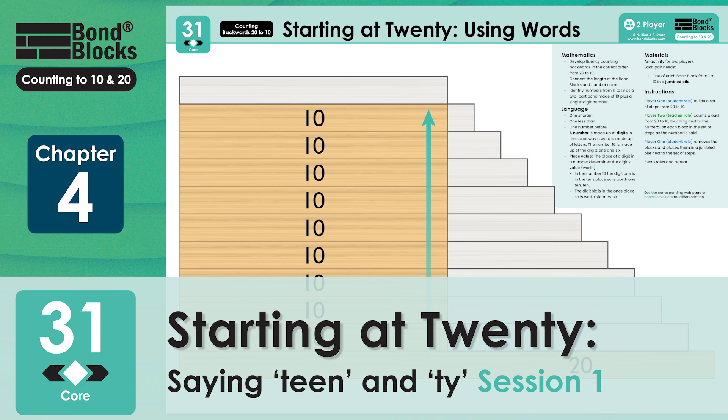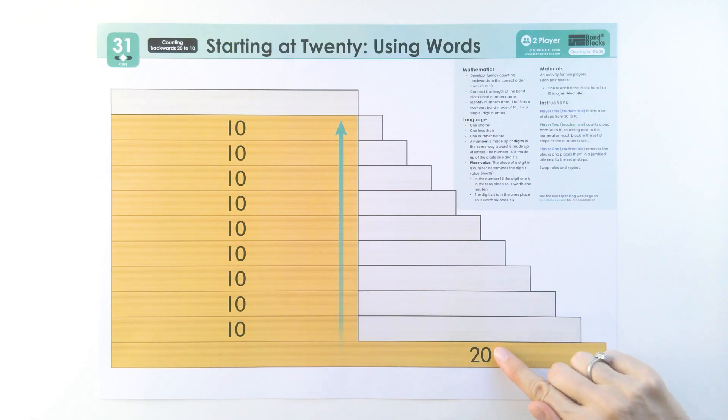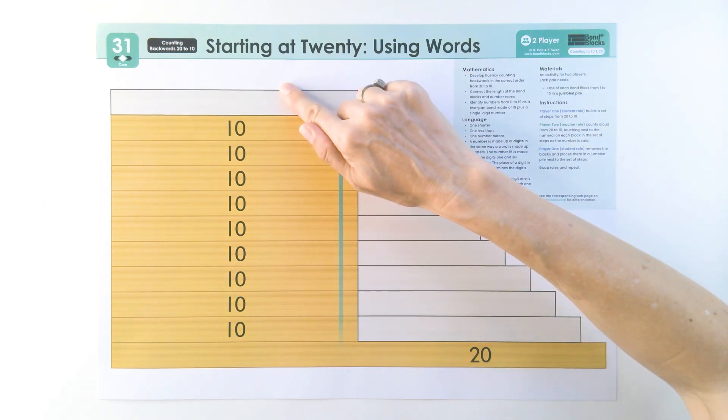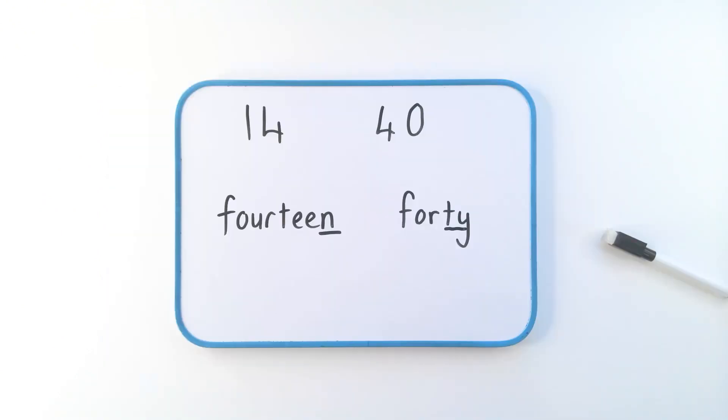Welcome to activity 31. In this activity we're going to be counting backwards from 20 to 10. When we count backwards today we're going to be using the teen numbers.